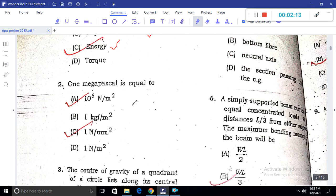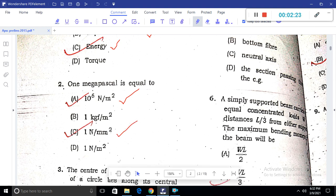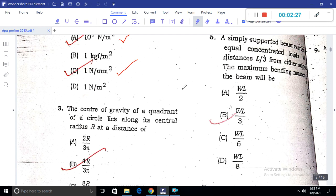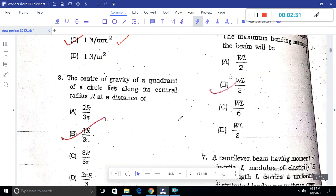Question 2: One megapascal is equal to 10^6 N per meter square, which equals 1 N per mm square. Next, the center of gravity of a quadrant of a circle lies along its central radius at a distance 4R by 3 pi.